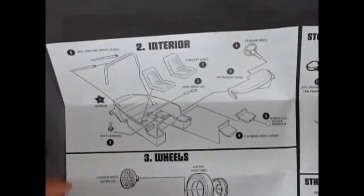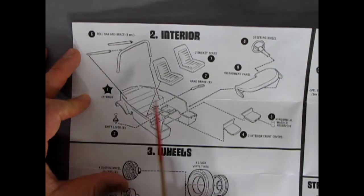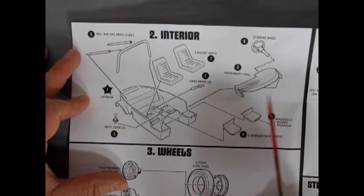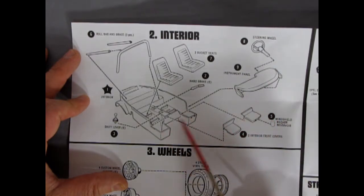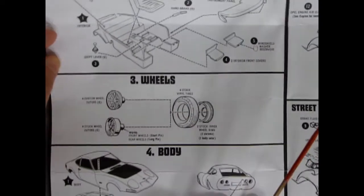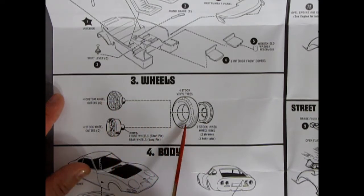So then we crack this over into our interior. And there we've got a roll bar with braces. Shift lever that goes in. Two bucket seats and brake handle. Interesting the back part here is sort of shaped like a 63 Corvette. We've got our steering wheel instrument panel. We have these two little interior front covers that go on there for your feet to sit in. Windshield washer reservoir. And then we get our wheels. Then you actually have a choice of stock wheels down here. Or these custom style. Then you have four vinyl tires and the wheel back.